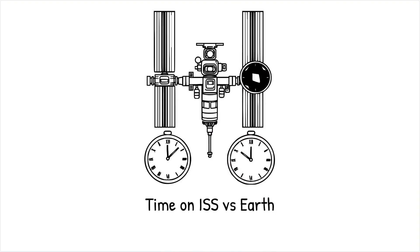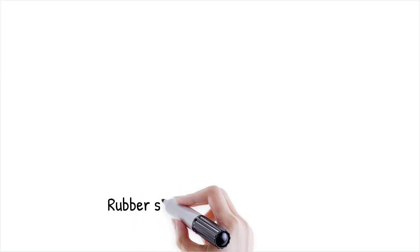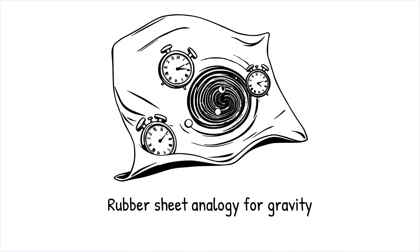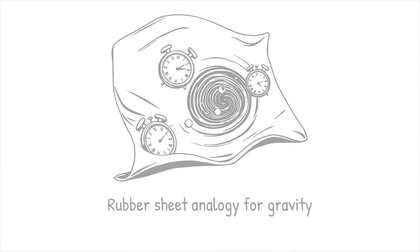This is like a stretched rubber sheet. If one person presses down on it—gravity—their clock runs slower than someone standing on a flat part of the sheet.